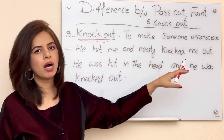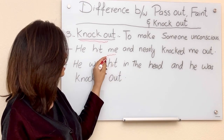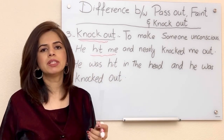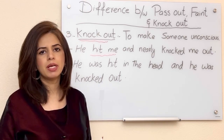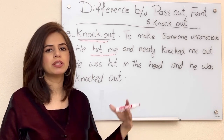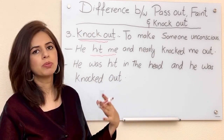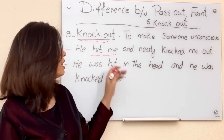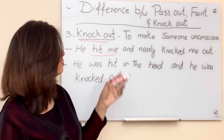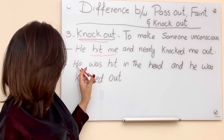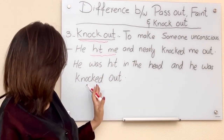For example: 'He hit me and nearly knocked me out.' If someone hits you and you become unconscious, there is no medical situation involved — it is a physical strike. So we use knock out. Another example: 'He hit him in the head and he was knocked out.' Because of the physical hit to the head, the person became unconscious.